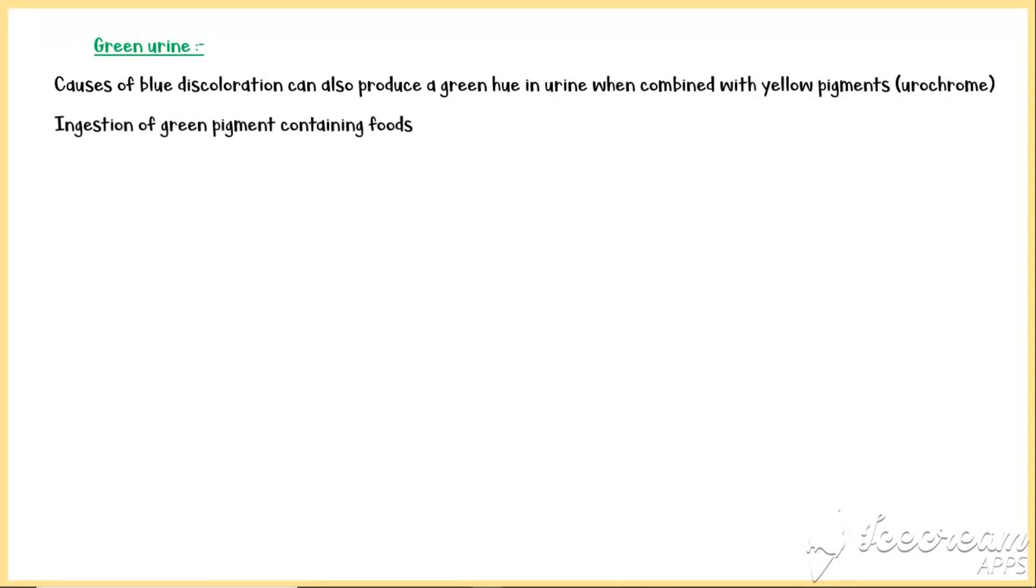Causes of blue discoloration can also produce a green hue in urine when combined with yellow pigments such as urochrome. In addition, ingestion of green pigment-containing foods can also lead to greenish discoloration. For example, consumption of a large amount of asparagus may result in slightly greenish urine. Medications that are known to cause green urine include promethazine, cimetidine, amitriptyline, metoclopramide, and indomethacin.